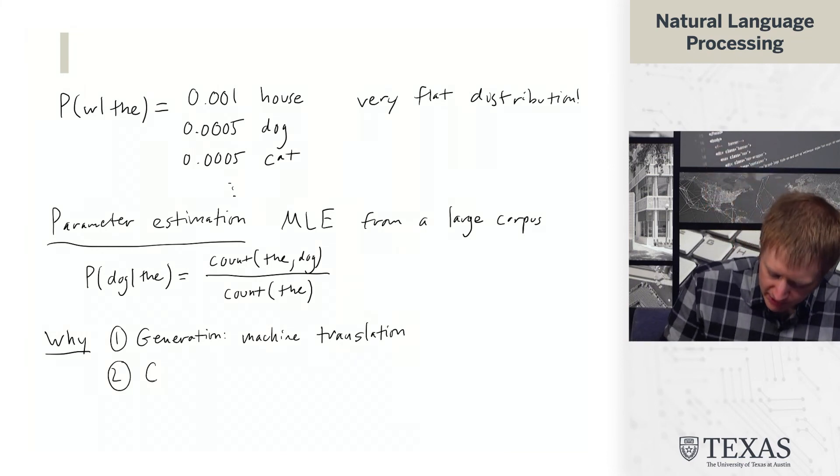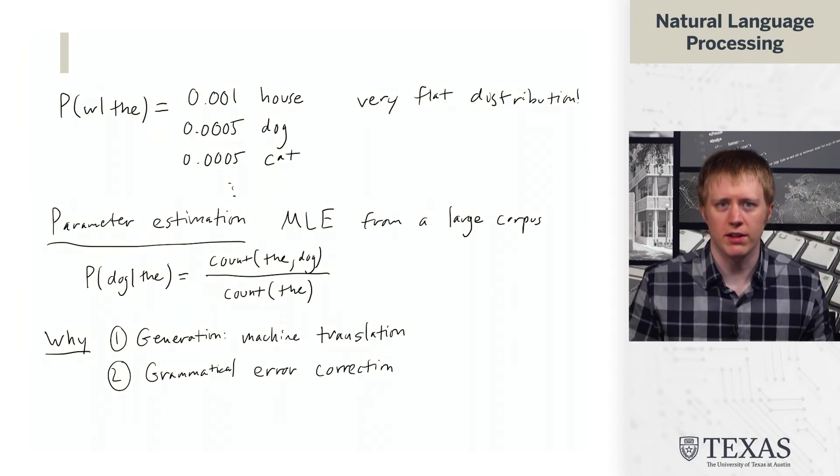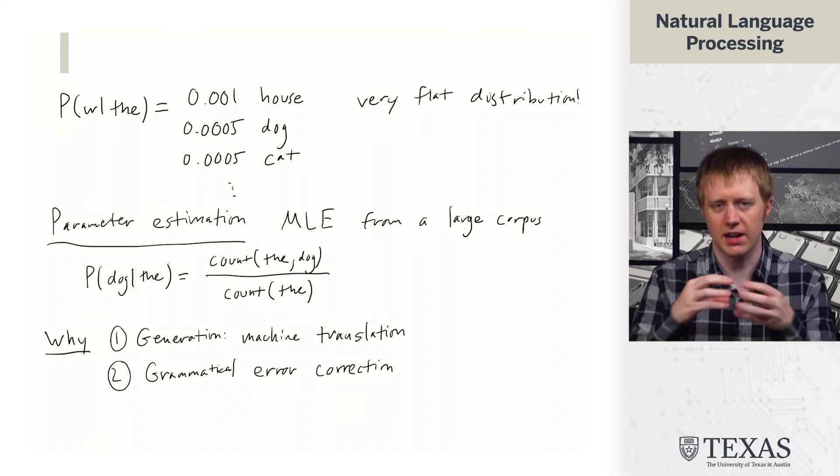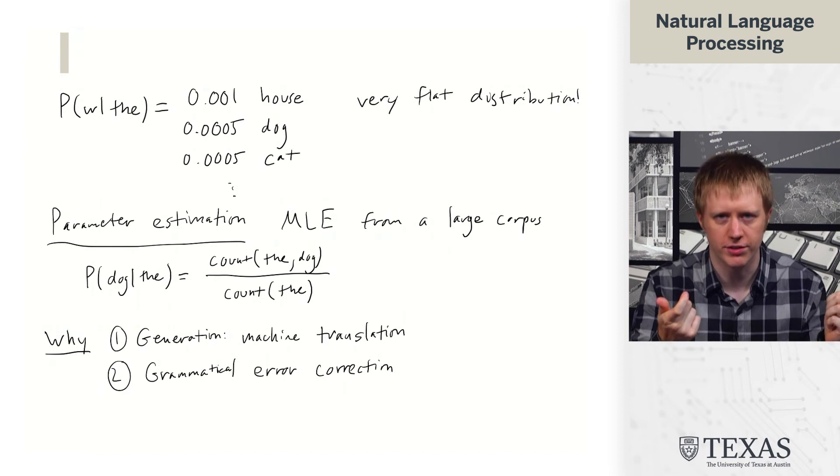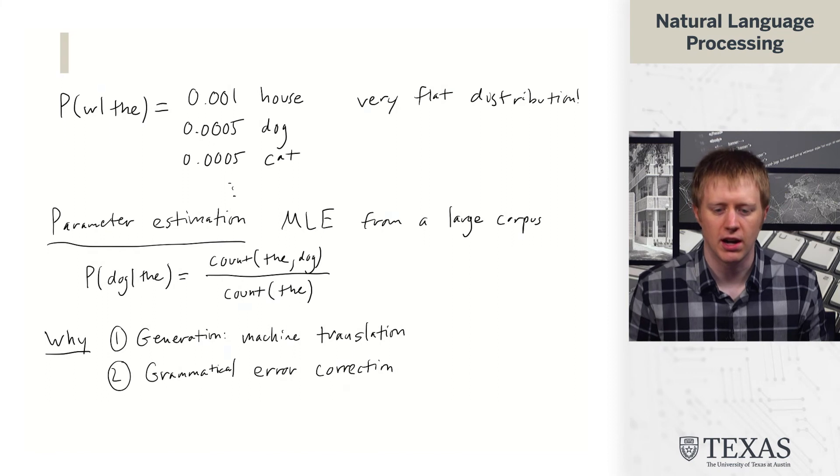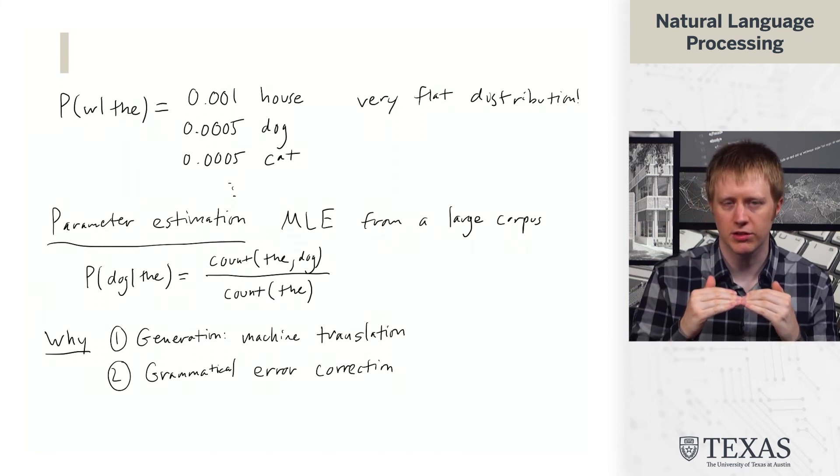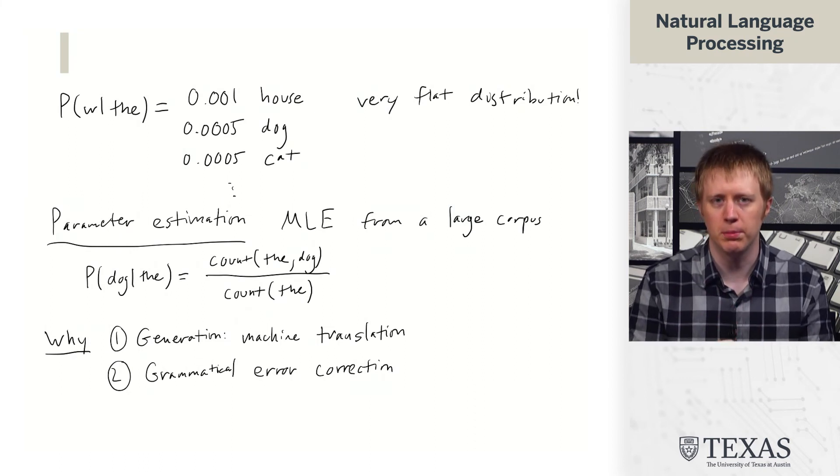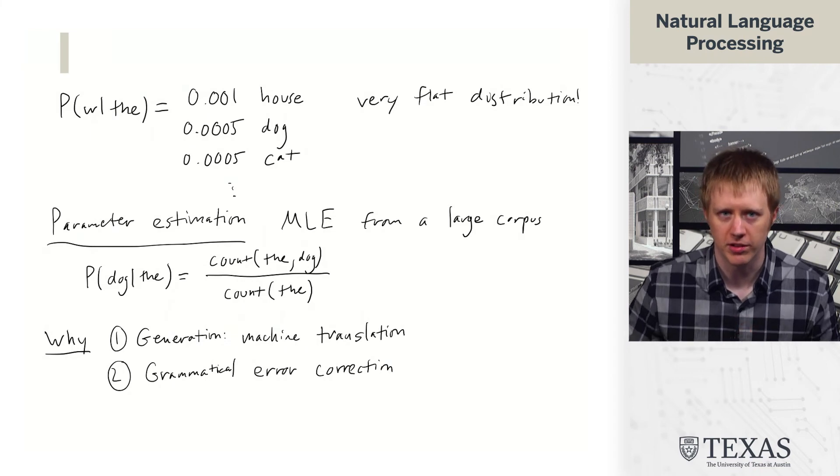Another application is grammatical error correction. So if we want to build a system that can take some text that might have some grammar errors in it and figure out, let's say you used the wrong choice of article somewhere, what we can do is we can try checking, do other articles dramatically increase the language modeling probability? So can it help us find text that's ungrammatical but more like the the, or something like that, which should have pretty low probability under one of these models.